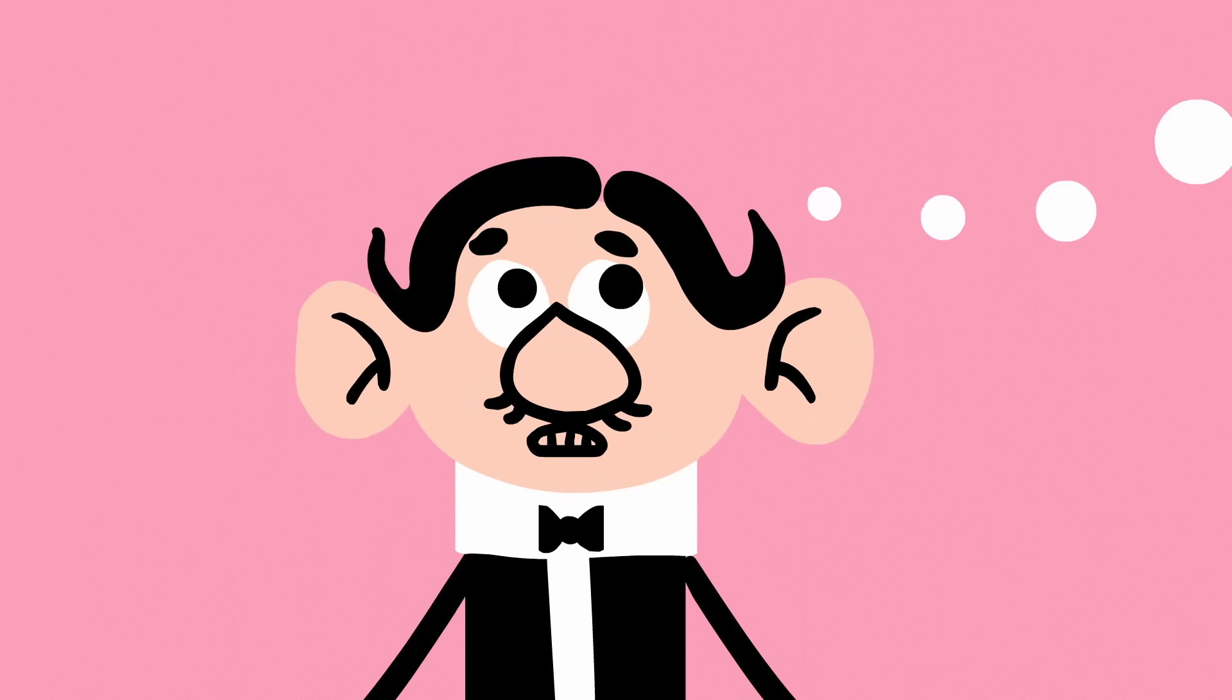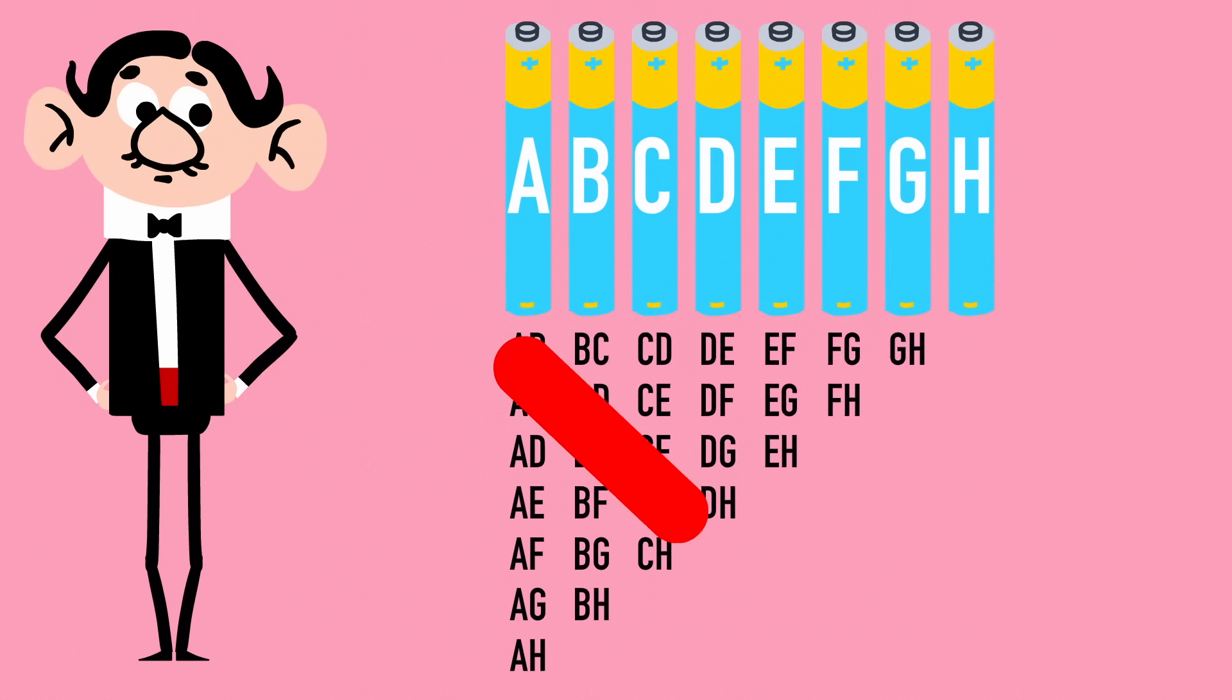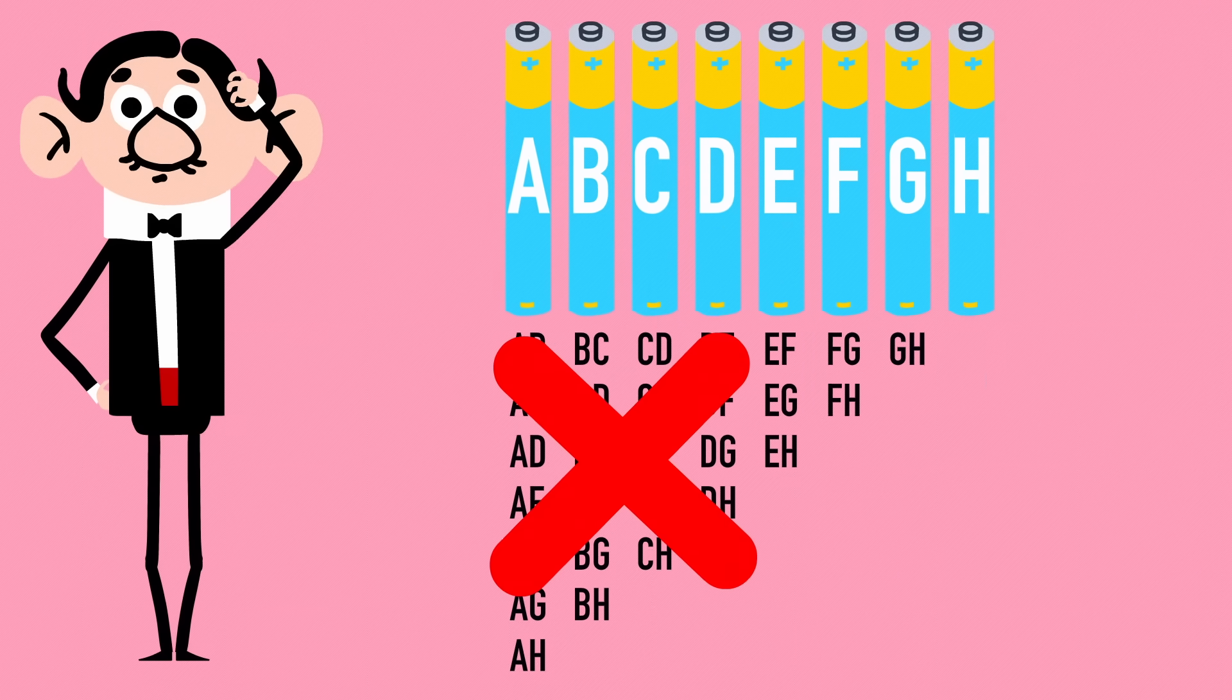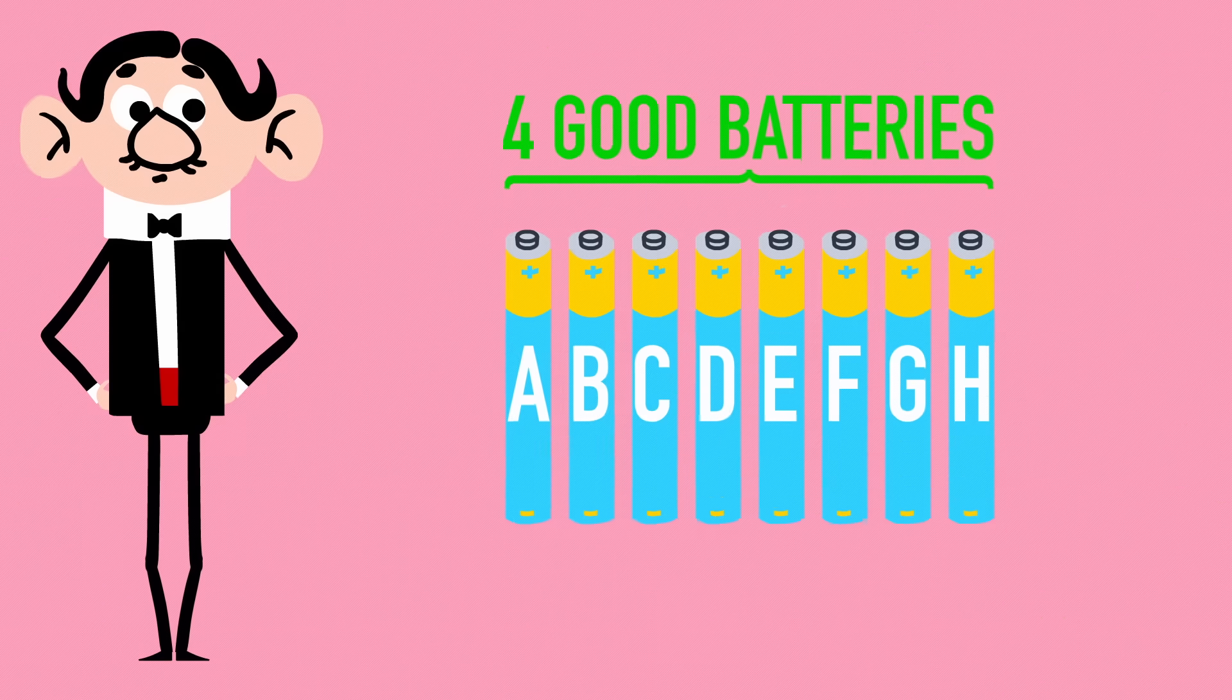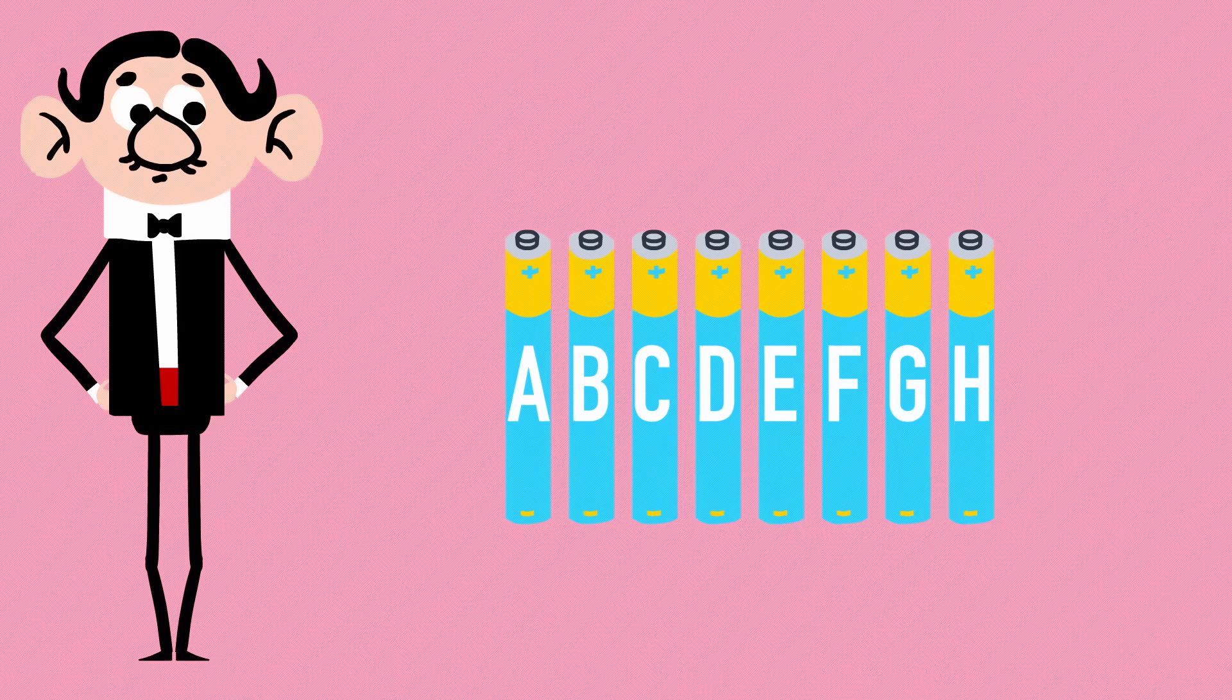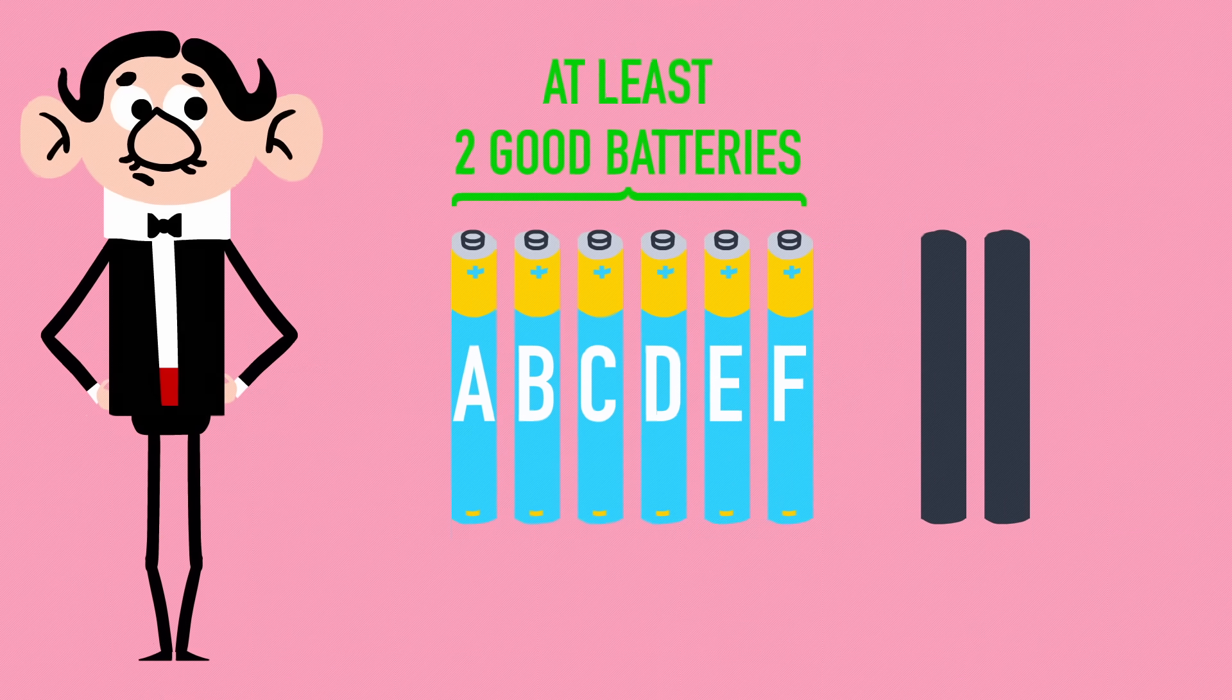You can't rely on luck. You need to assume the worst possibility and plan accordingly. However, you don't actually need to test every possible combination. Remember, there are four good batteries in total, meaning that any pile of six you choose will have at least two good batteries in it.